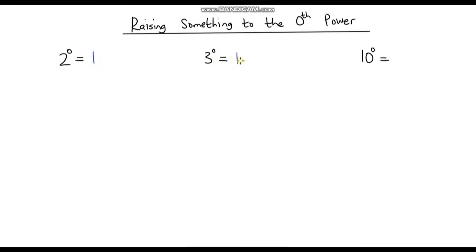3 to the power 0 is also 1, and you may be seeing where this is going. 10 to the power 0 is also 1. So why on earth is the answer 1? In fact, anything to the power 0 is 1.